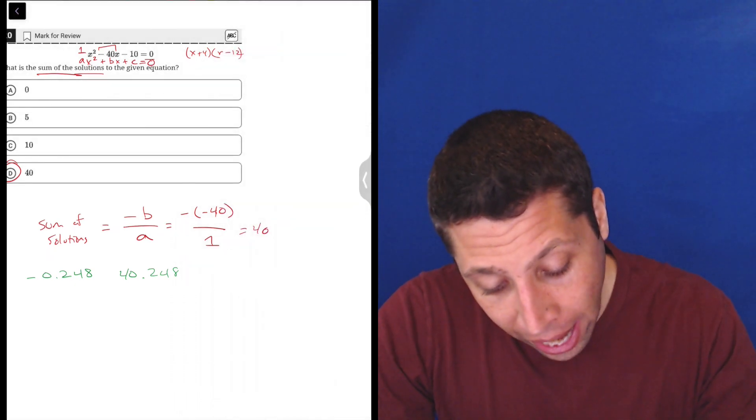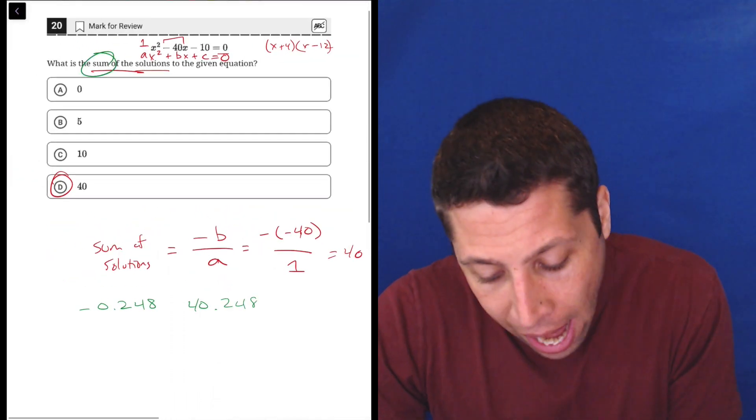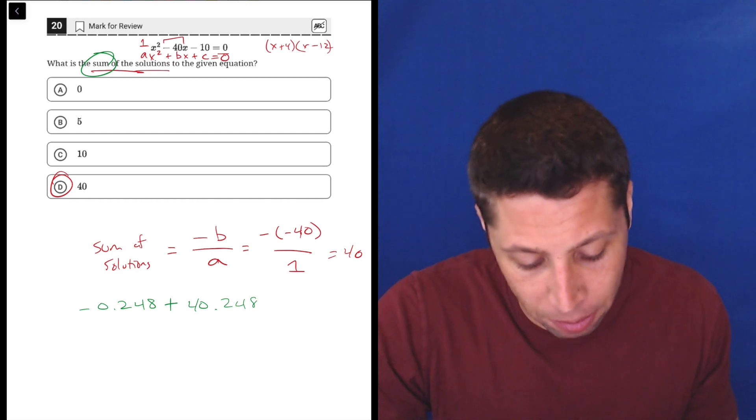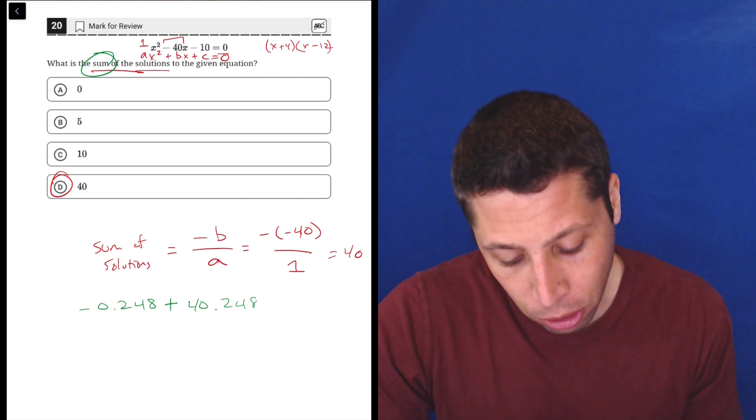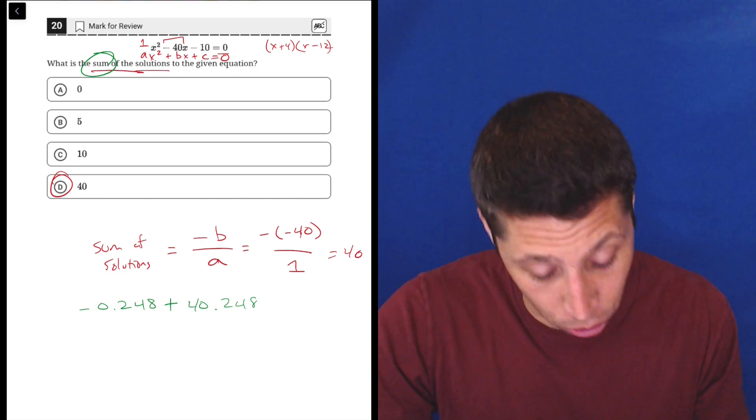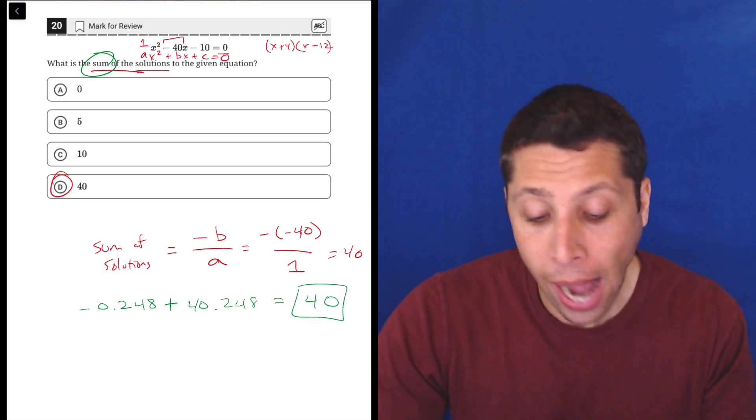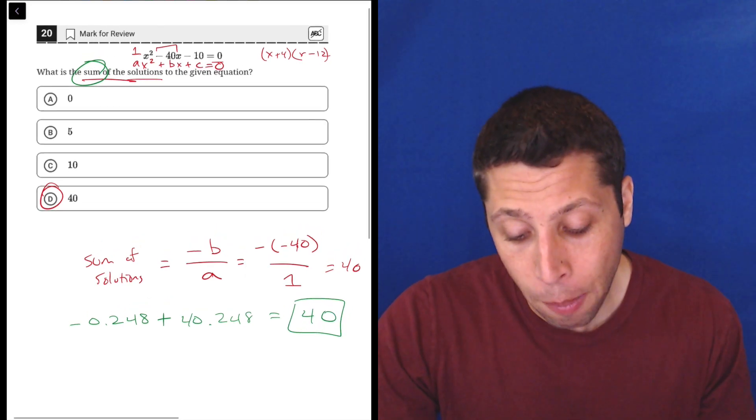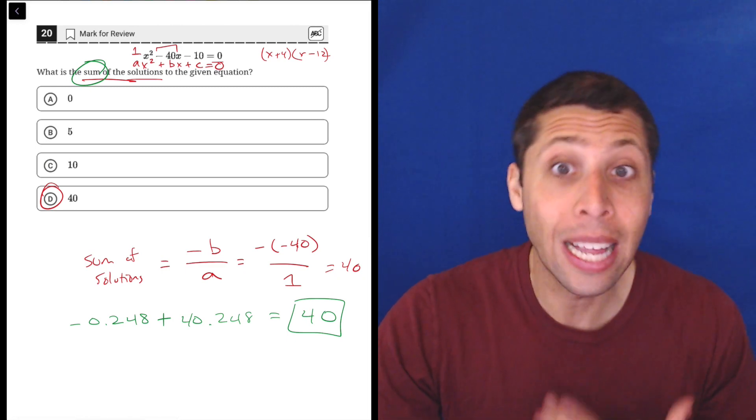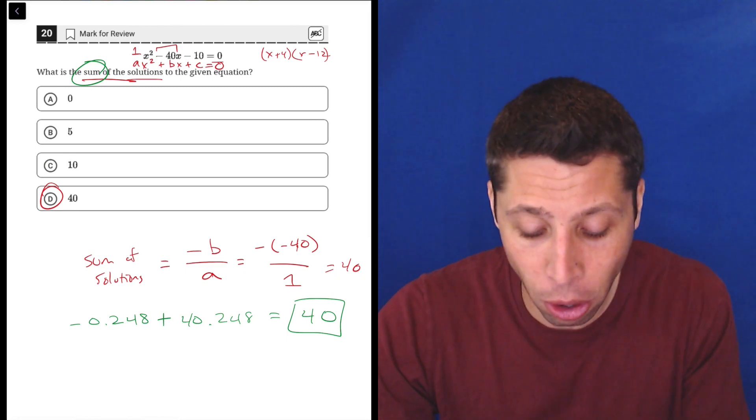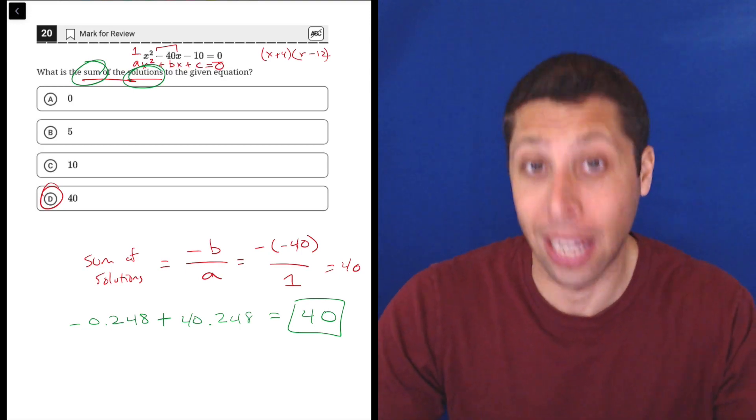So, what that means then is if I have both of the solutions, and they were asking for the sum of them, we can just add them together. And you can see negative 0.248 plus 40.248 will just be regular old 40. So, we could get it that way as well. I don't think that that's the most efficient way, but especially if this is all new to you, there's less to memorize with that solution because all you really need to know is what a solution is.